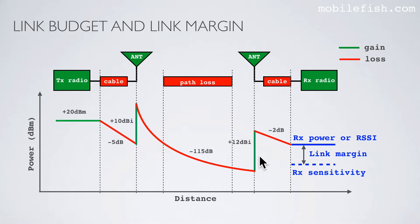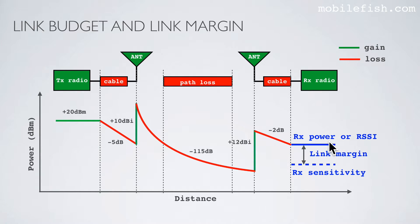When a signal propagates through the medium, the signal loses strength. This is called the path loss or path attenuation. A well-designed antenna usually increases the signal strength. The received power, also known as received signal strength indication or RSSI, is the sum of the transmitted power plus all the gains and losses.